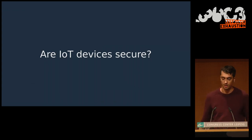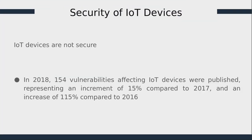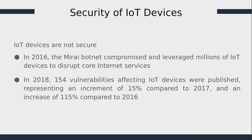So the question we asked is: are IoT devices secure? In 2016, the Mirai botnet compromised and leveraged millions of IoT devices to disrupt core internet services such as Twitter, GitHub, and Netflix. In 2018, 154 vulnerabilities affecting IoT devices were published, representing an increment of 15% compared to 2017 and an increase of 115% compared to 2016.